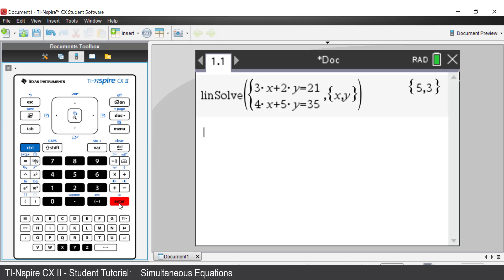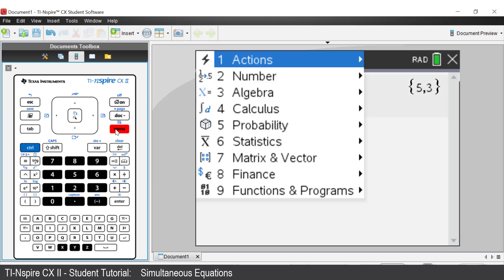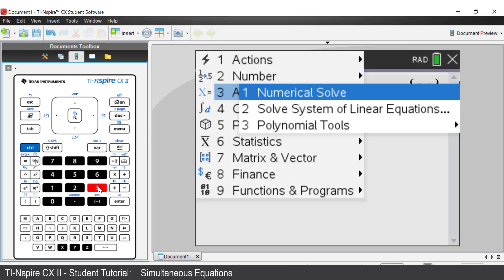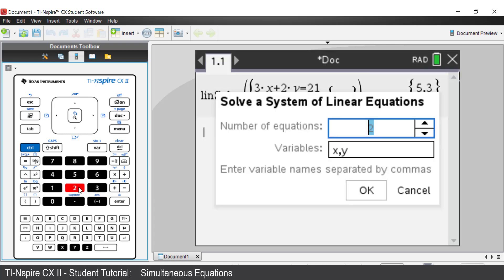If we need to solve for three equations with three variables, press menu. This time press the number corresponding to algebra. Press the number next to solve system of linear equations. You may wish to use this process to select the menu option or you may wish to use the up and down arrow keys and then pressing enter to select the menu option.